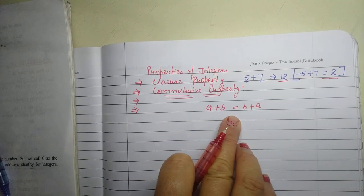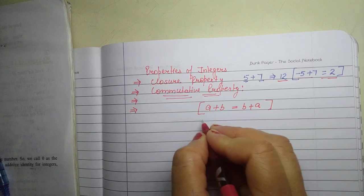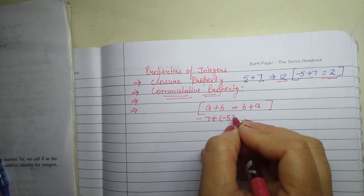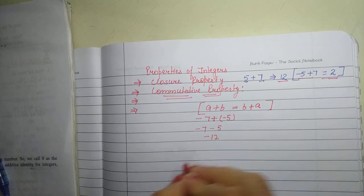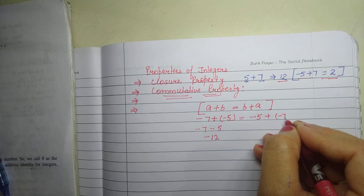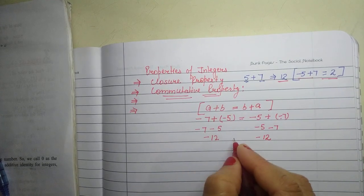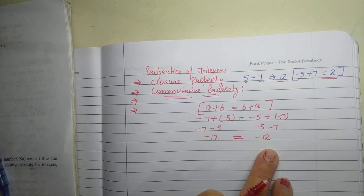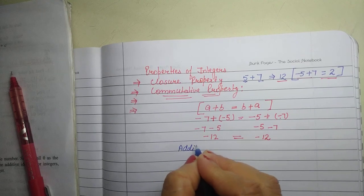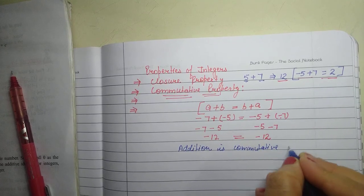For example, a plus b and b plus a give the same result. To explain with integers: if I add minus 7 with minus 5, I get minus 12. If I change the order — first minus 5 then minus 7 — the answer is still minus 12. In both cases we get the same answer, so addition is commutative for integers.